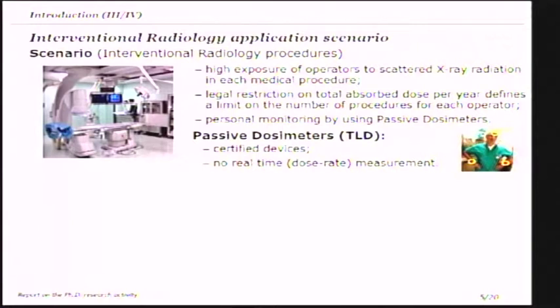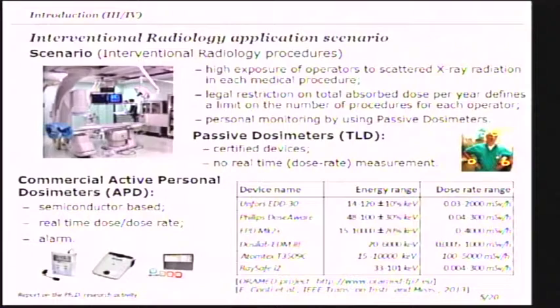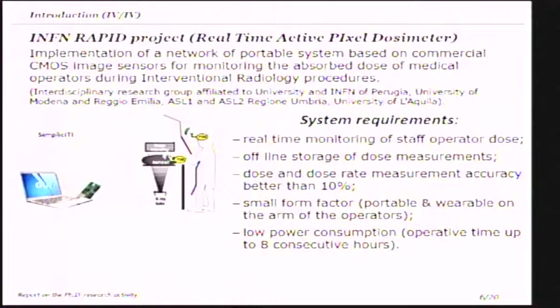The monitoring scenario is the interventional radiology procedures, and the attention was focused on the operator instead of the patient, because medical operators are exposed to scattered x-ray radiation during their work activity. Currently the monitoring of the absorbed dose is performed by using passive dosimeters that cannot provide a real-time measurement. In order to reduce the total absorbed dose, some active personal dosimeters are available on the market that can provide a real-time measurement of dose and dose rate, but in the ORAMED project in 2011 these devices were analyzed and some limitations were highlighted. In this context we want to implement a network of dosimetric systems.